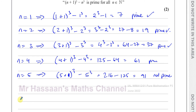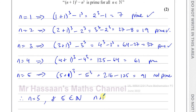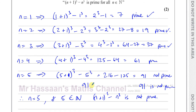Therefore, we found that when n equals 5, and 5 is an element of the natural numbers, (n+1)³ minus n³ is not prime, because 91 is not prime — 91 equals 7 times 13.